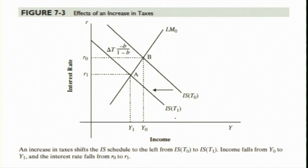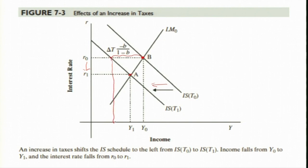Subsequently, what if there is an increase in tax? When there is an increase in tax, the initial equilibrium position is here. The IS curve shifts leftwards, and you can see that this is the full negative impact supposed to happen due to the increase in tax. However, since there is a decrease in income — which you can also interpret as a decrease in government expenditure — the rate of interest decreases from R-naught to R-1, and as a result, the actual decrease in output is less than the full amount.